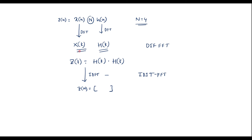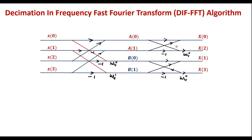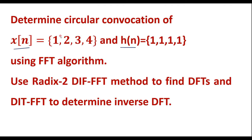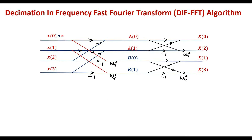First, let us calculate X(k) and H(k) using DIF FFT algorithm. This is the signal flow graph for DIF FFT algorithm. The given values are: x(0)=1, x(1)=2, x(2)=3, x(3)=4. We can observe that the input sequence is in regular order, and the output DFTs X(k) are in bit-reversal order.